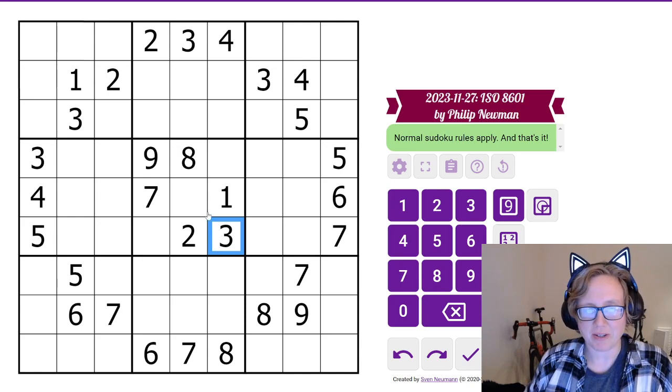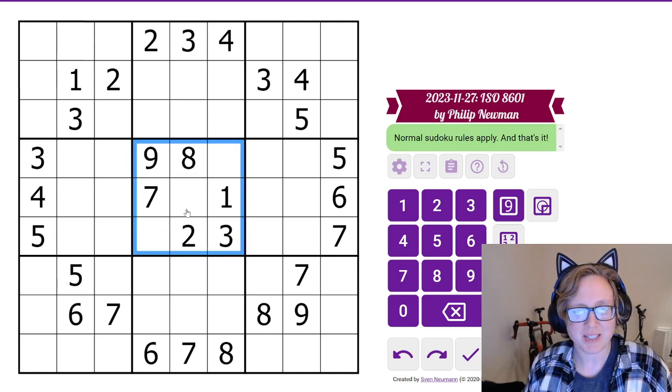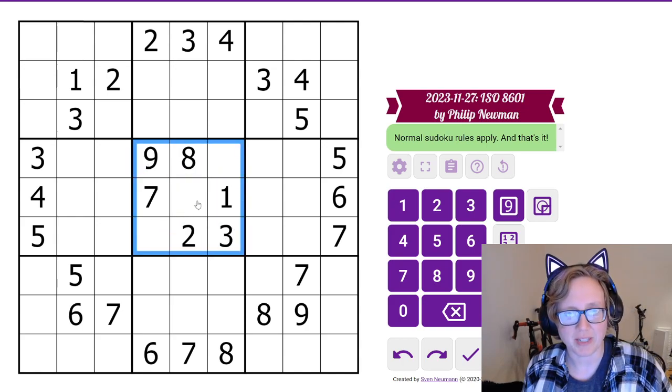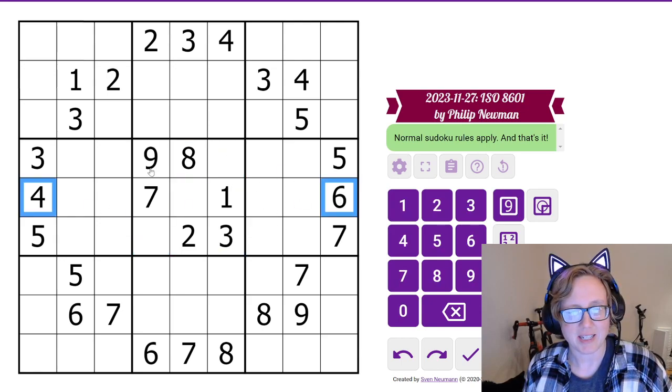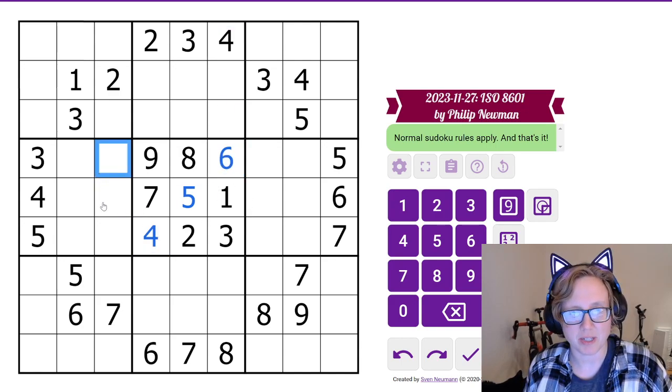The first thing that jumps out at me is I have one region that has almost all of the digits filled in. I'm only missing 4, 5, and 6. I can see that 4 and 6 both see this cell. 4 sees this cell, so my 4 goes here and my 6 goes here.